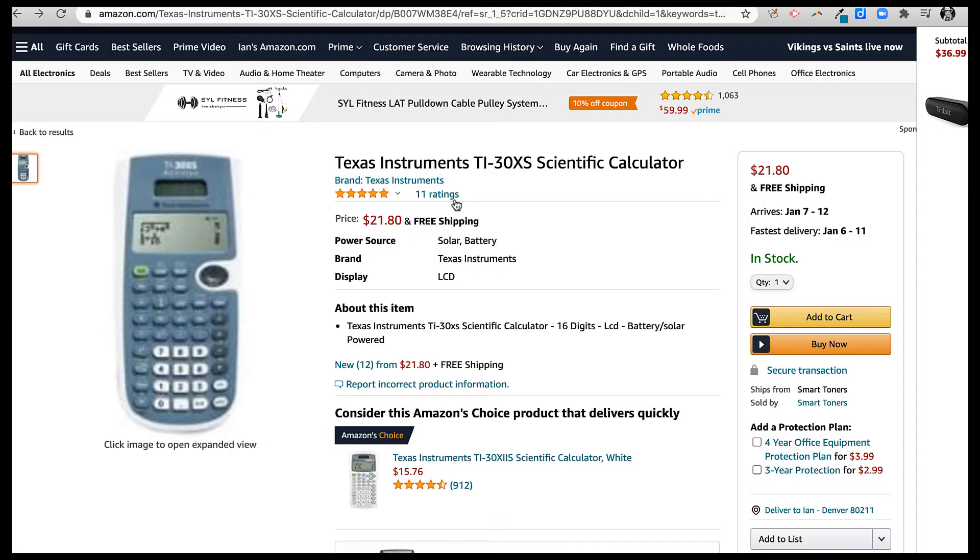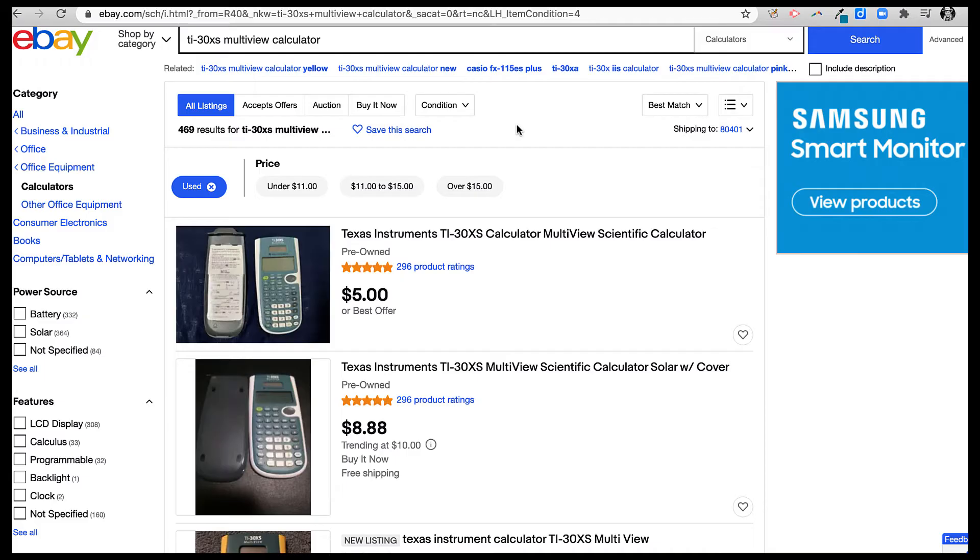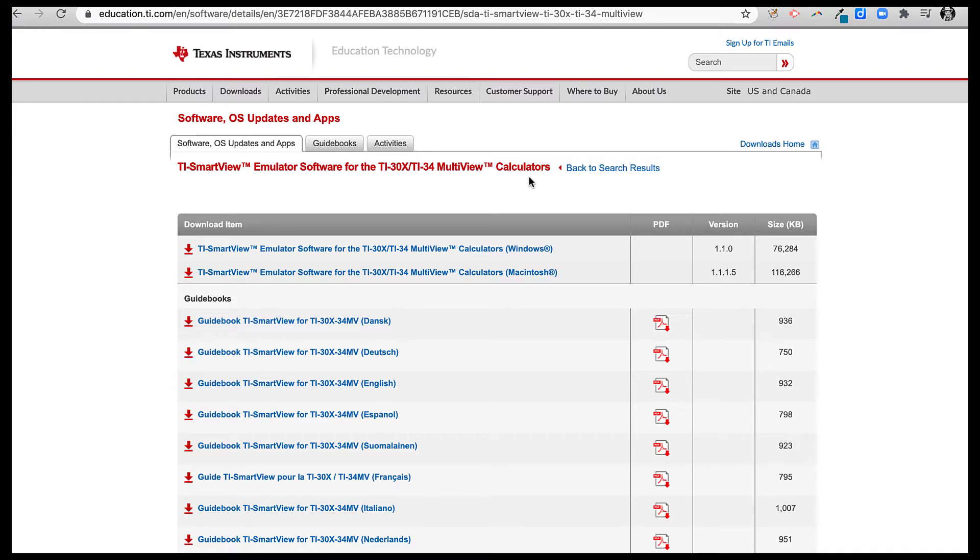Here's what it looks like on Amazon. You can get it for roughly $22. You can find it used on eBay for $5 to $8. There's also a 90-day free trial of the emulator software, the same software that I'm going to use in this video.